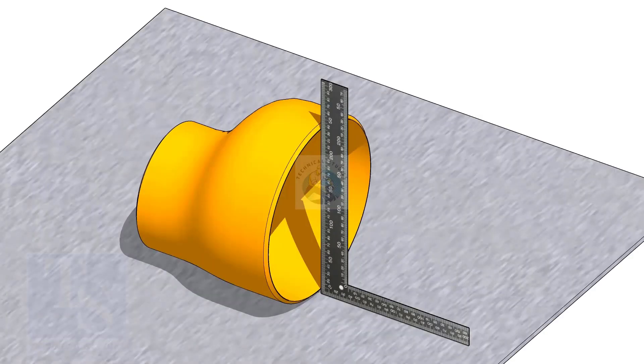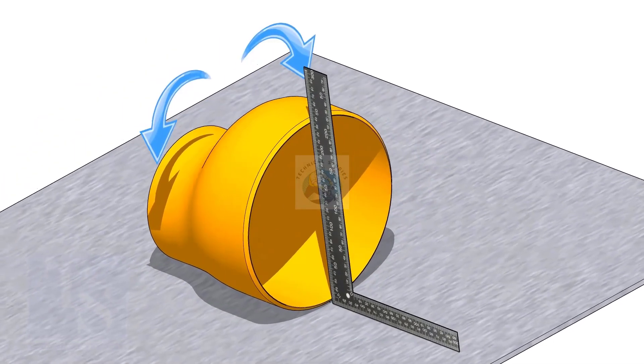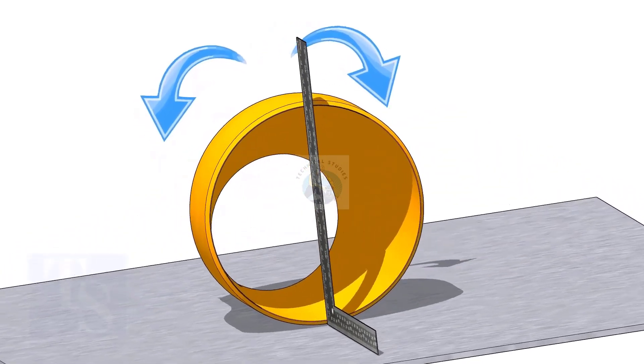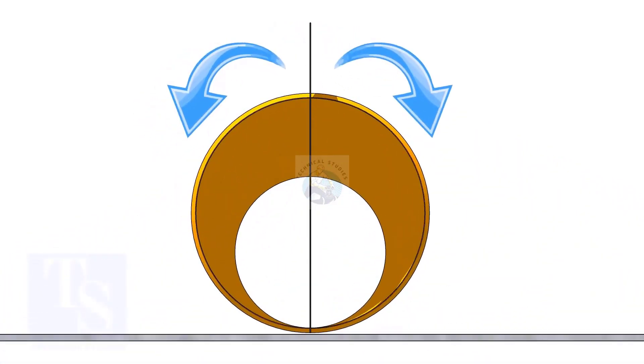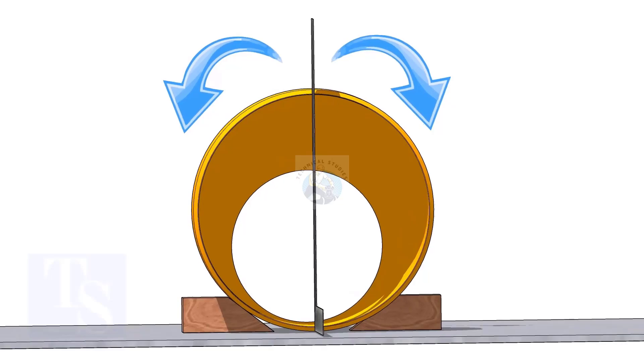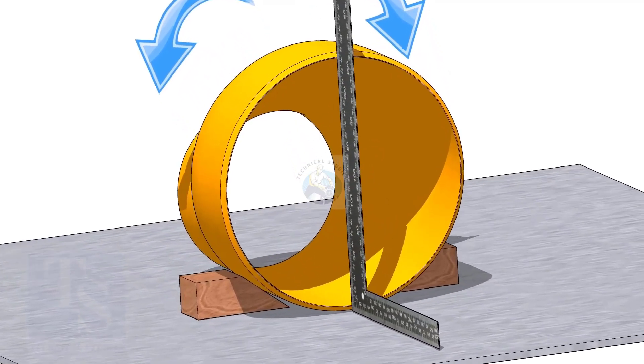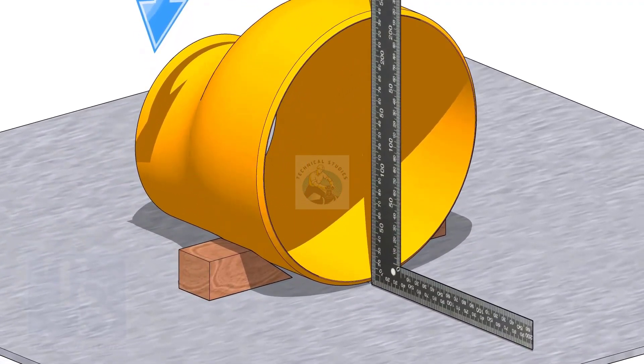Put the reducer on a straight plate. Hold a right angle at the large side of the reducer and gently rotate it back and forth until the face of the reducer is square to the right angle. Put packing on both sides of the reducer.